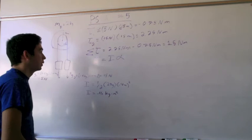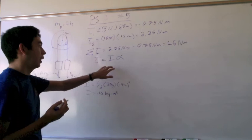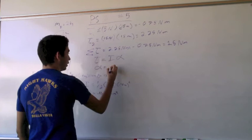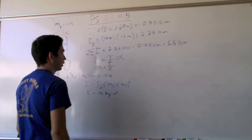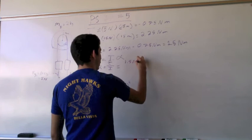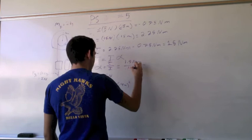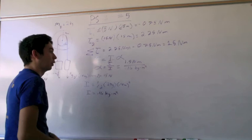Now that we know the sum of the torques and the moment of inertia, we can solve for alpha. Now we know alpha is equal to the torque over the moment of inertia. We know the sum of the torques, which is 1.5 newton meters over 0.16 kilograms times meters squared.